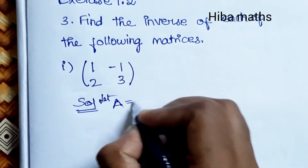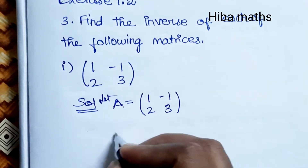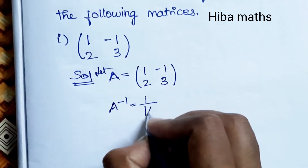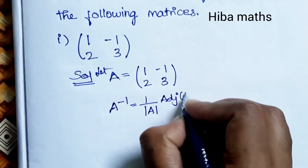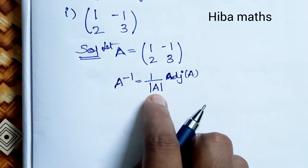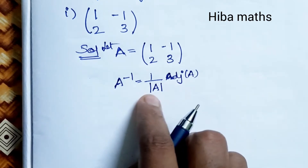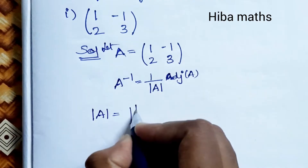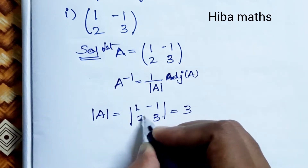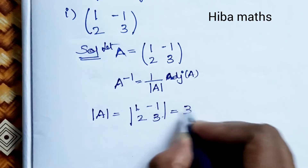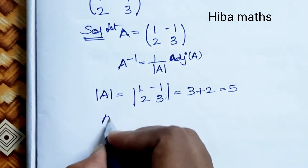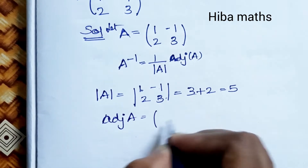Let A equal to the matrix [1, -1; 2, 3]. Now, what is the inverse of A? The formula is: A inverse = (1 / |A|) × adjoint of A. Substituting into the formula, we find the modulus of A: 1×3 = 3, and 2×(-1) = -2, so |A| = 3 - (-2) = 5.